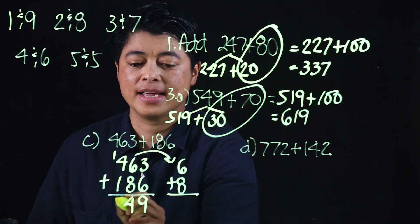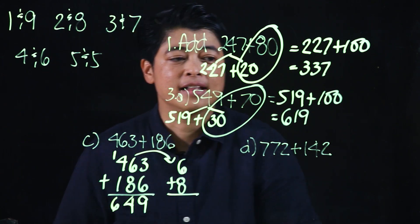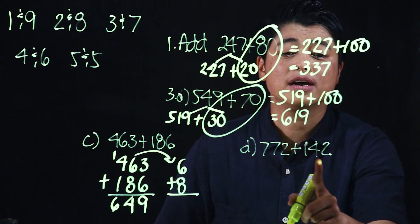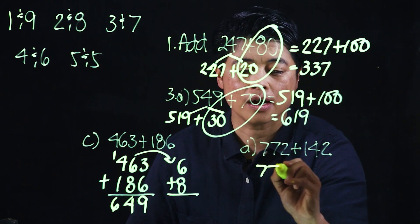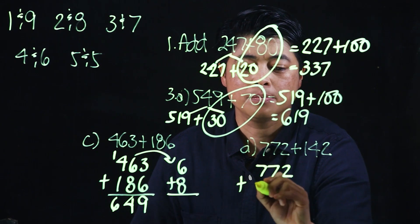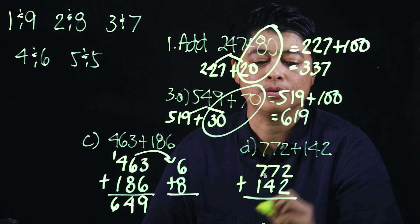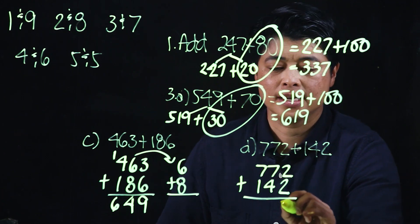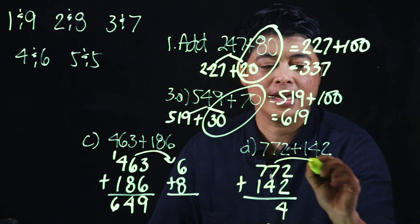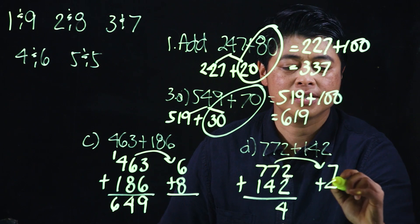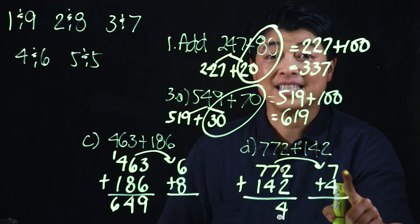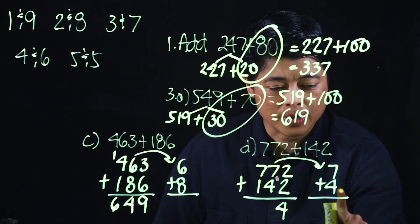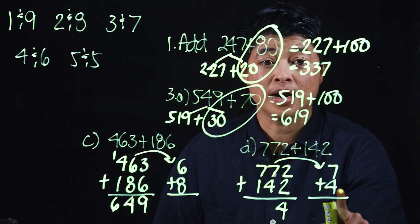Finally, 772 added with 142. The bigger one is on top: 772 plus 142. The ones place has no regrouping. This is 7 plus 4, so we start with 7. We need 3, and we have an extra 1, which makes it 11.